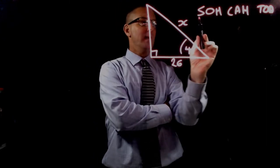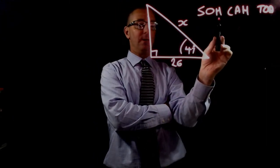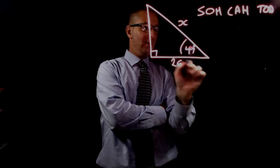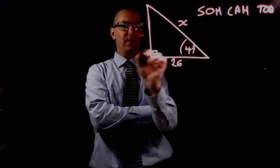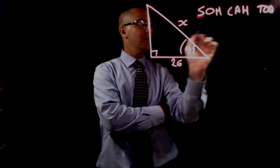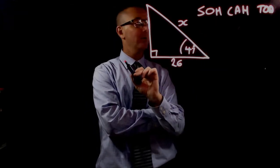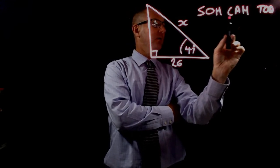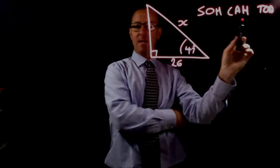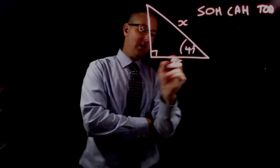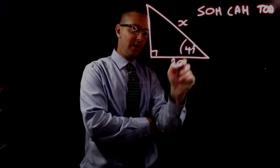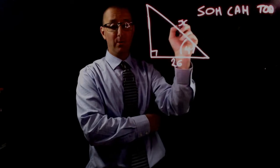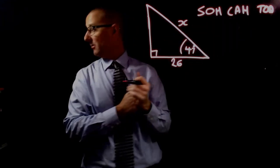Sine needs the opposite and the hypotenuse. We don't know the opposite side, so we can't use that ratio. The cosine ratio requires the adjacent and the hypotenuse, and that's what we have. We're going to use the cosine ratio.